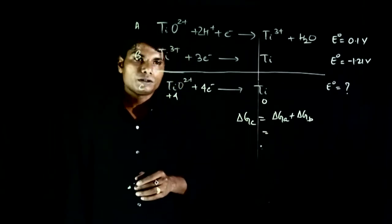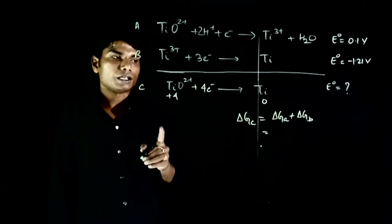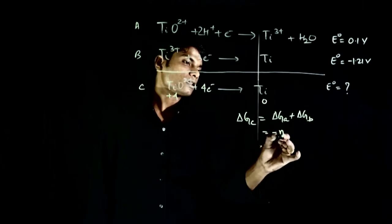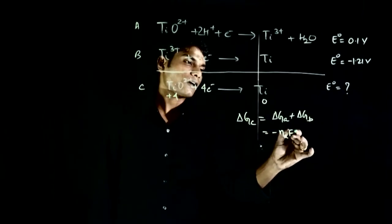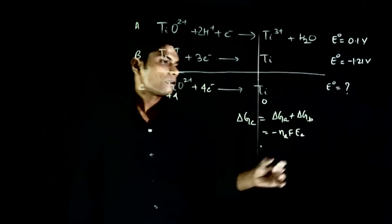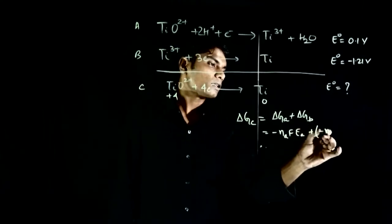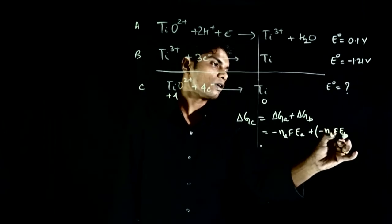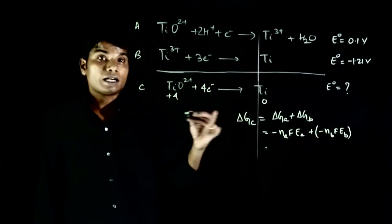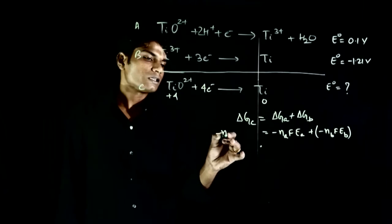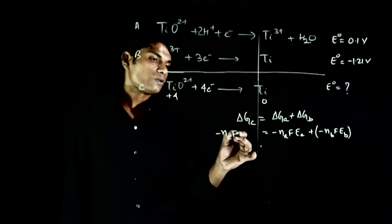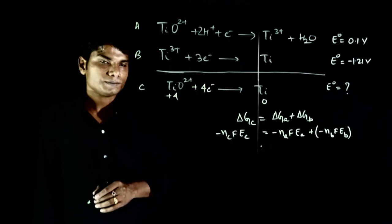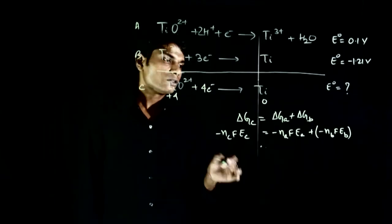delta G of A will be minus N of A F Faraday into E of A plus minus N of B into F into E of B, and delta G of C will be minus N of C into F into E of C.